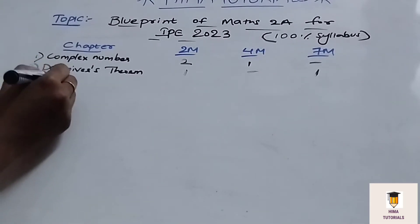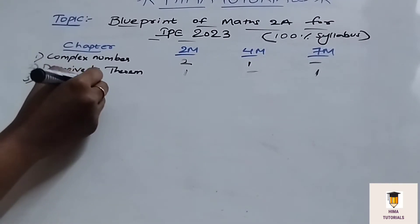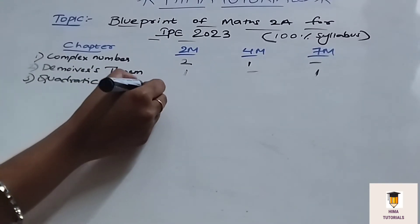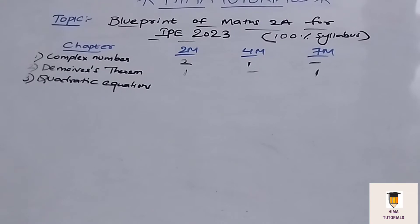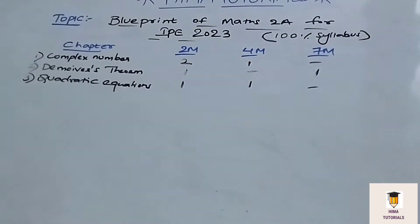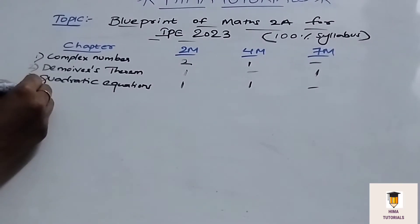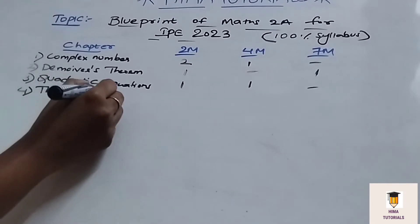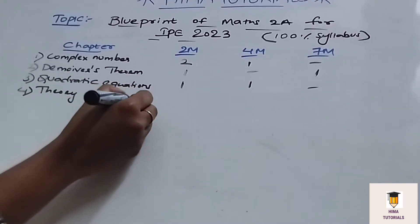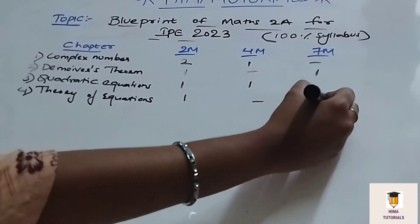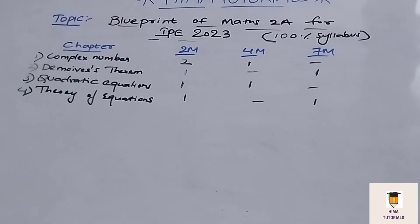Coming to the next chapter, Quadratic Equations. In this chapter, we get 1 two-mark and 1 four-mark question. And in Theory of Equations, we get 1 two-mark and 1 seven-mark question.